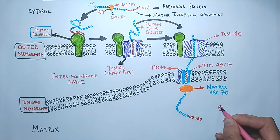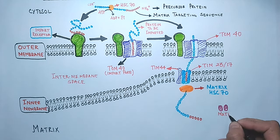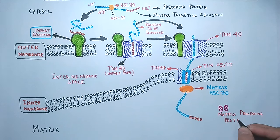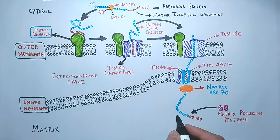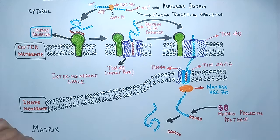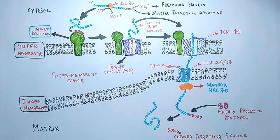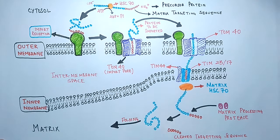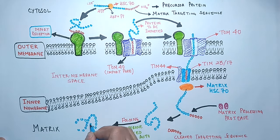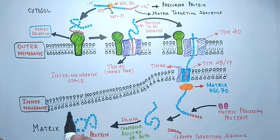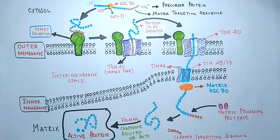Once the protein is in the matrix, the MPP (matrix processing protease) cleaves the targeting sequence from the rest of the protein molecule. The protein then folds into its functional form, either by chaperonins or auto-folding, and finally we get the active functional protein in the mitochondrial matrix. This is how proteins destined for the mitochondrial matrix are transported through these channels.